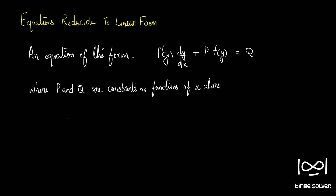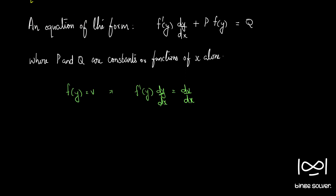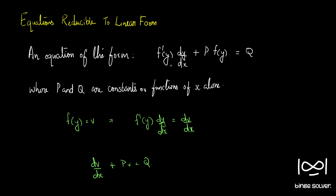We put f(y) = v, which implies f'(y)·dy/dx = dv/dx. Using this substitution, our equation reduces to dv/dx + Pv = Q. This is now a standard form of a linear differential equation with v as the dependent variable, and we can solve it using the methods discussed in previous videos.